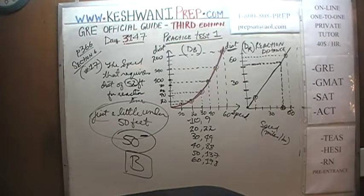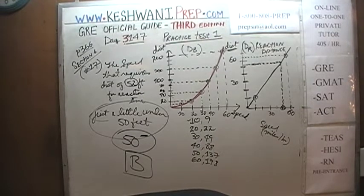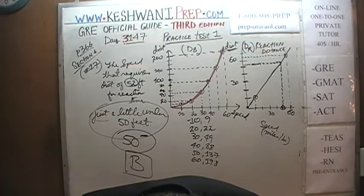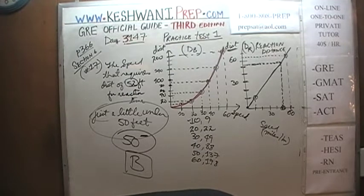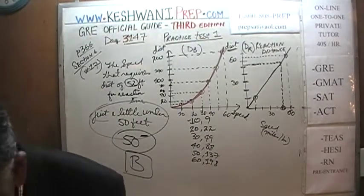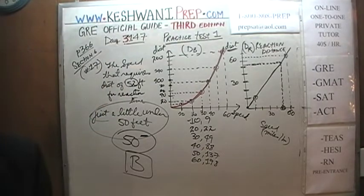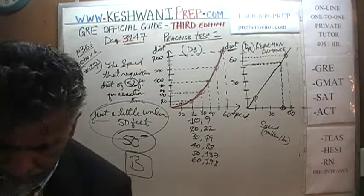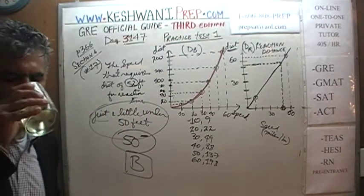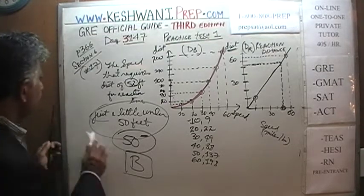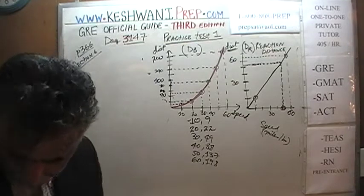So question 17's answer is B. Answer choice B says 47 feet — well, 47 mph. That qualifies as a little under 50 miles per hour. Let me also note the other answers: question 18 is A, question 19 is A, and question 20 is C.